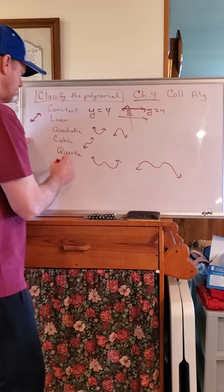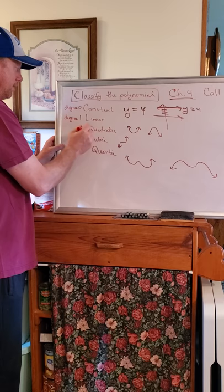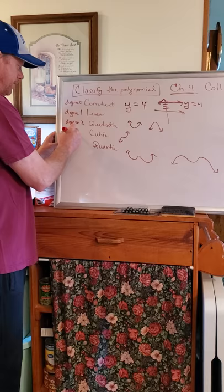So what you guys need to know about this is constant is degree zero. Linear functions are degree one. Quadratic are degree two. Cubic is degree three. And quartic is degree four.